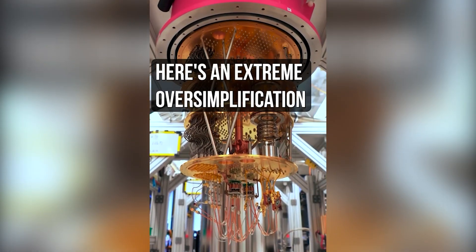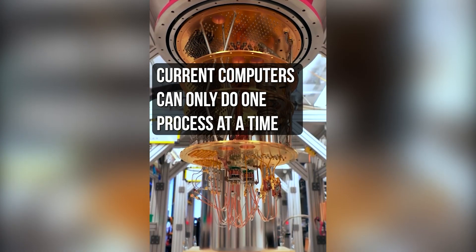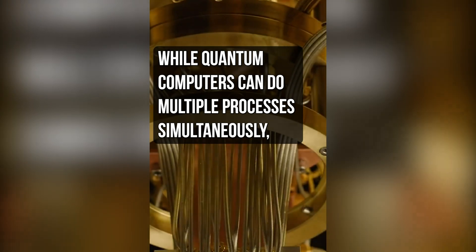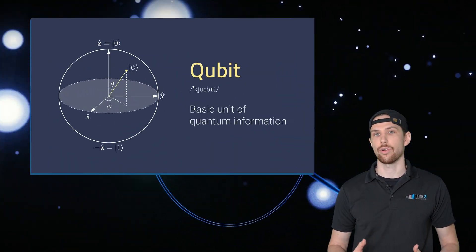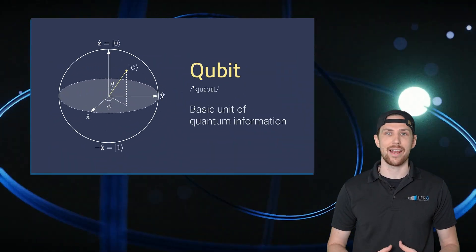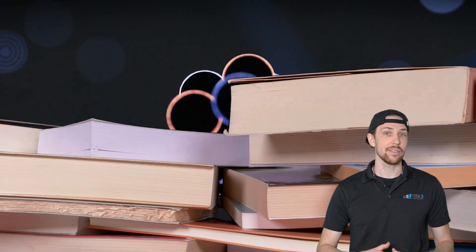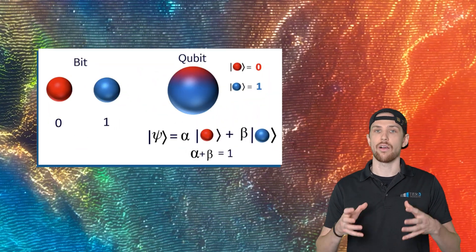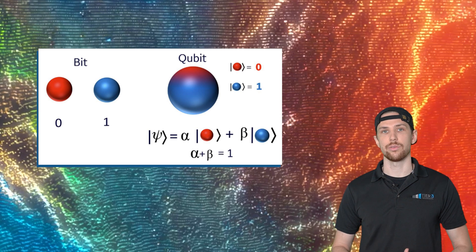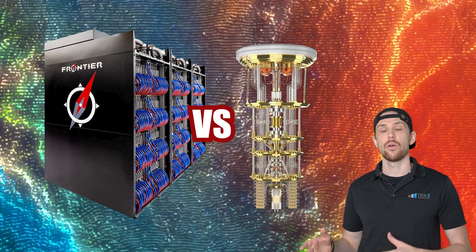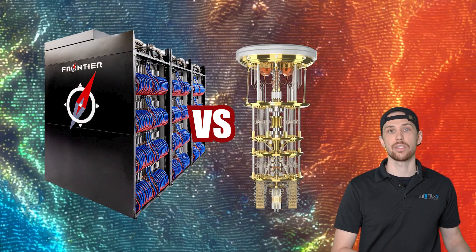Here's an extreme oversimplification of how quantum computing works. Regular computers can only do one process at a time — 1, then 0 — while quantum computers can do multiple processes simultaneously. Now that's not technically correct. QCs use something called qubits, and trying 1 and 0 at the same time isn't actually what they do. QCs are not just faster supercomputers; they are instead fundamentally different tools for processing and understanding data. One is not necessarily better than the other, but QCs are better at certain things than supercomputers.